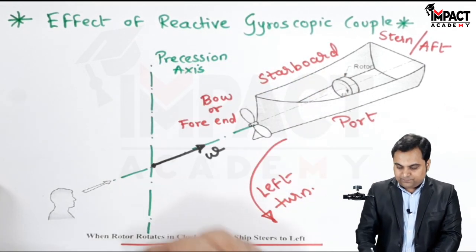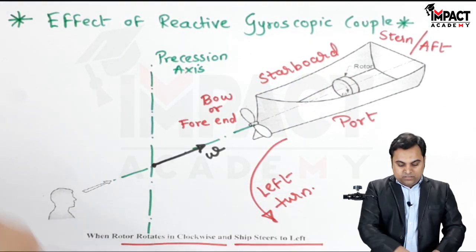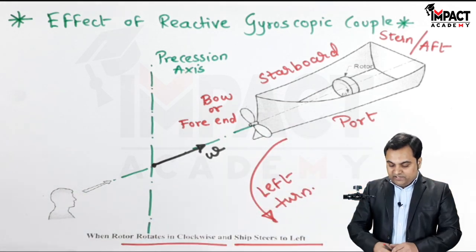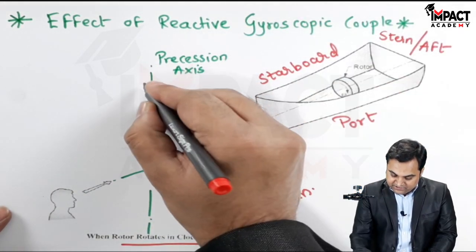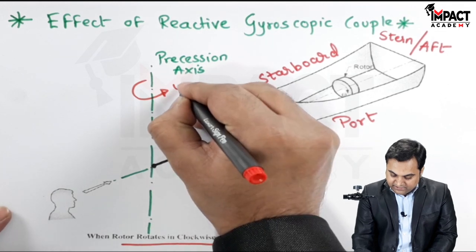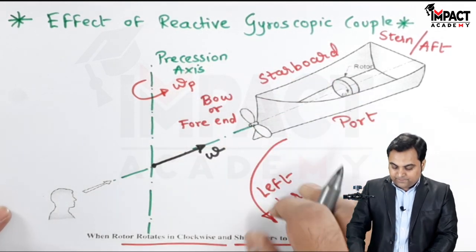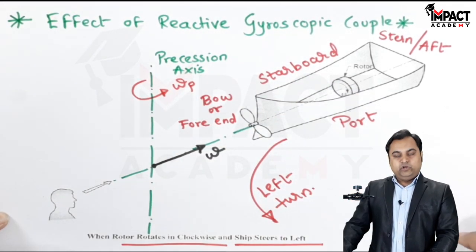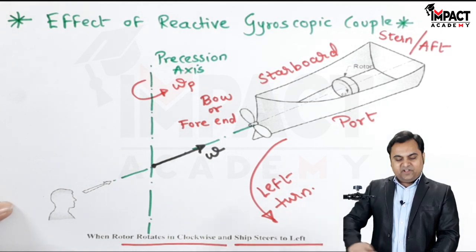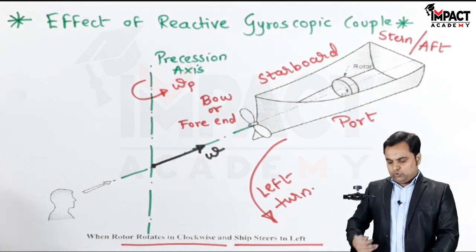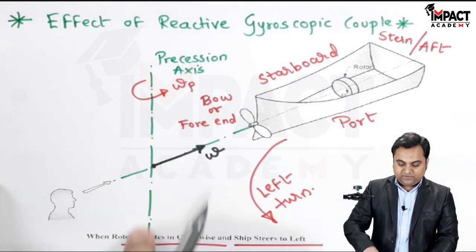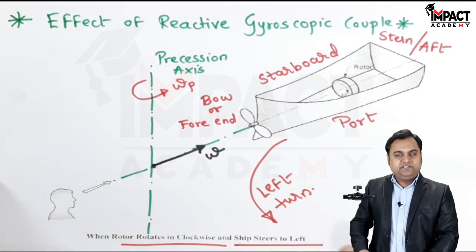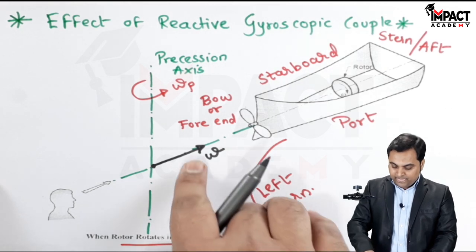This is the precession axis. When the ship is taking a left turn, it is rotating about the precession axis in this direction — that is the direction of omega p, the precessional angular velocity. As we can see, there are rotations about two different axes: one is the spin axis and the other is the precession axis, so because of that there is a gyroscopic effect.